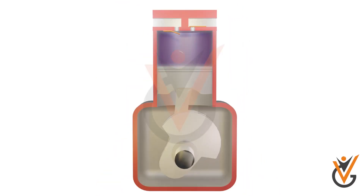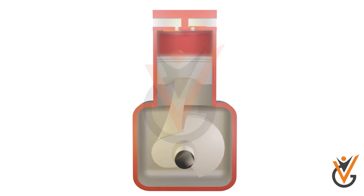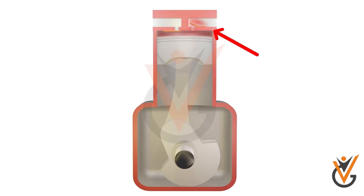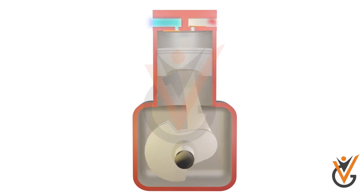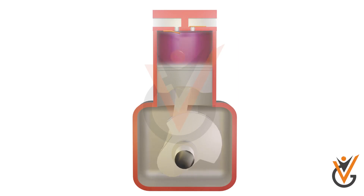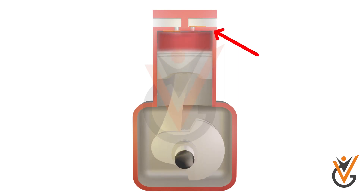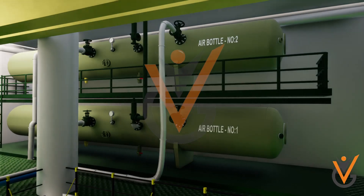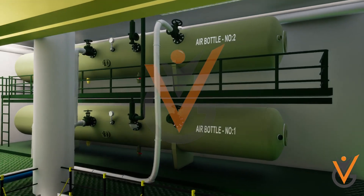Now the piston reciprocates upward, and this upward movement starts building up the pressure and closes the suction valve. When the air gets pressurized to its specific value, the discharge valve gets opened and the pressurized air starts moving through the discharge line and gets stored in the air bottle.